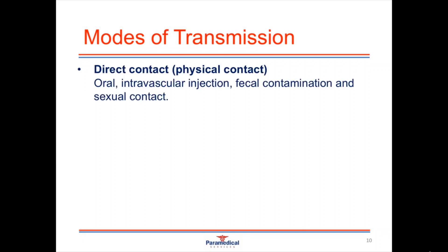The first type of mode of transmission is through direct or physical contact. This is one of the easiest ways for a pathogen to enter the human body because it bypasses a lot of the body's natural defense mechanisms. Examples include oral contact, contact through the eye, intravascular injections, fecal contamination, and sexual contact.